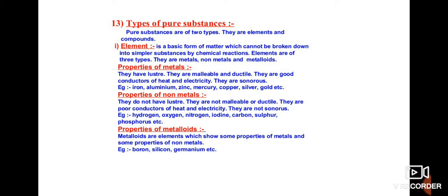Non-metals do not have luster. They are not malleable or ductile and they are poor conductors of heat and electricity. Most of them are usually present in a gaseous state and they do not produce any sound when struck. Common examples of non-metals are hydrogen, oxygen, nitrogen, iodine, carbon, sulfur, and phosphorus.